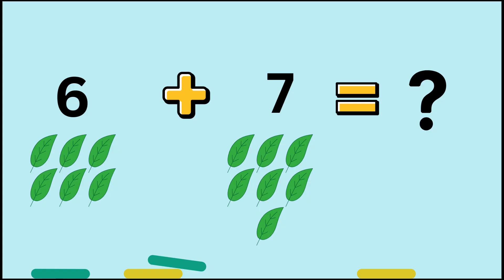6 plus 7. So, there, 7 is the bigger number. Then 8, 9, 10, 11, 12, 13. Amazing. 6 plus 7 equals 13.